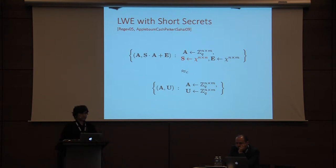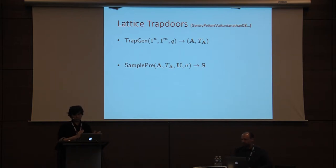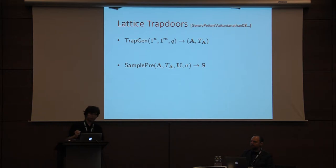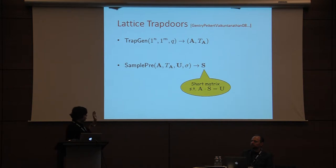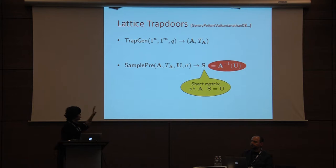Another important tool we'll use is lattice trapdoors, which consist of two algorithms: TrapGen and SamplePre. TrapGen takes as input the dimensions of a matrix and a modulus q, and outputs a matrix A along with some trapdoor information. Using this trapdoor, you can run SamplePre for any matrix U and obtain a corresponding preimage S such that A times S equals U. We can use the shorthand notation A-inverse of U. Importantly, the matrix S is a short matrix, which will be very useful in building our separation result.